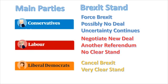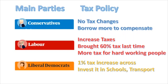What do the main parties stand for? From a Brexit perspective, Conservatives want to push Brexit through, possibly resulting in uncertainty or a no-deal Brexit. Labour want to negotiate a new deal and hold another referendum — they have no clear stance. Liberal Democrats are very clear: they want to cancel Brexit and move forward as a country. The clearest stand on Brexit comes from the Liberal Democrats and their coalition partners.